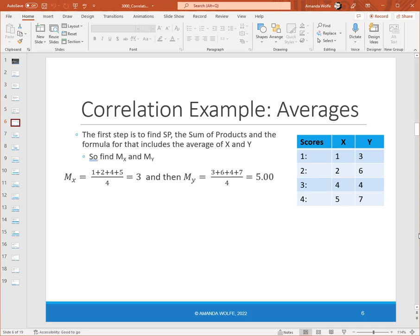So to come up with an average, we add together the scores on X, which are one, two, four, and five. We then divide by the number of scores there are, and there are four scores. So one plus two is three, three plus four is seven, seven plus five is twelve, and then twelve divided by four is three. So the average for X, the mean of X, is three.